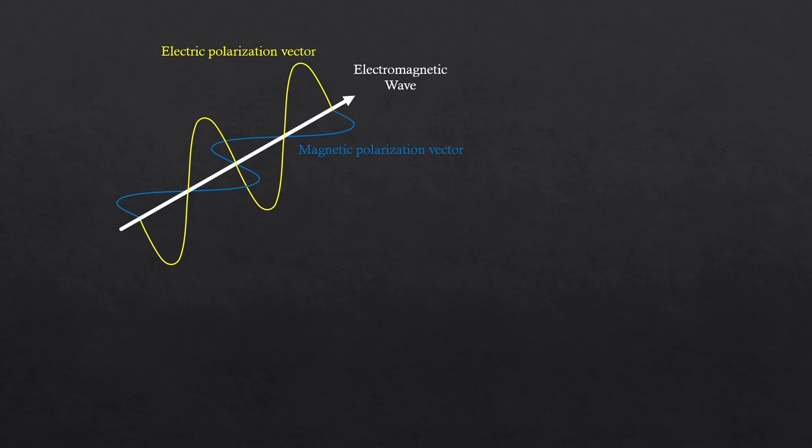So this case is where we have a vertically polarized light, since the electric polarization vector is oscillating vertically.